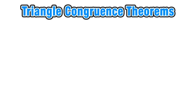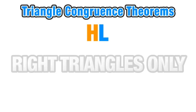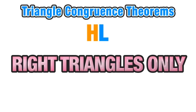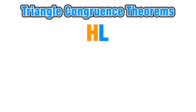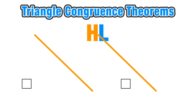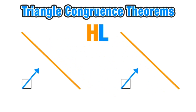Our final congruence theorem is a special case called Hypotenuse-Leg, and it applies to right triangles only. The key feature of any right triangle is its right angle. The hypotenuse is the longest side and is always opposite the right angle. This theorem says that if the hypotenuses in both right triangles are congruent and a leg — one of the other sides — is also congruent, then we have enough to proceed.